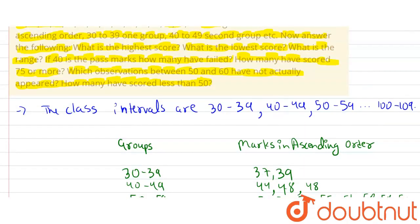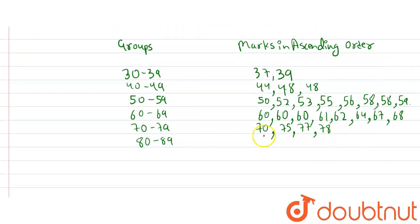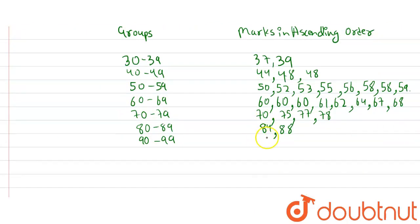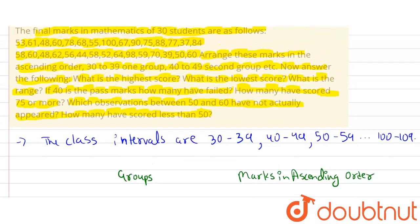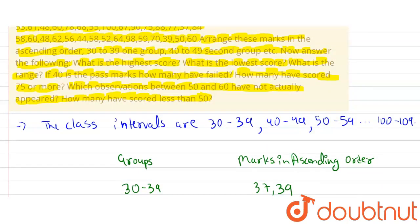For the group 80 to 89, the marks are 84 and 88. For 90 to 99, the marks are 90 and 98. And the last group is 100 to 109, with the remaining mark being 100. Now let's answer the following questions.